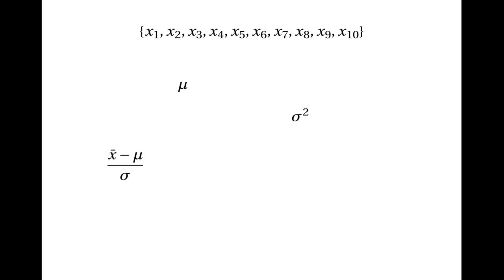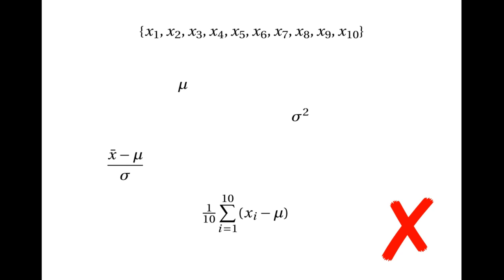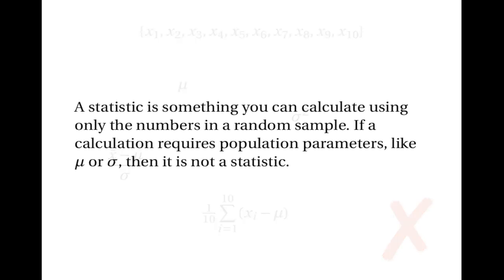So if you take the sample mean, subtract the population mean, and divide by the standard deviation, that isn't a statistic. In general, any calculation which you can only do knowing parameters of the population, like mu and sigma, isn't a statistic. So none of the things on this page is a statistic. In general, a statistic is something you can calculate using only the numbers in a random sample. If a calculation requires you to know population parameters like mu and sigma, then it can't be a statistic.